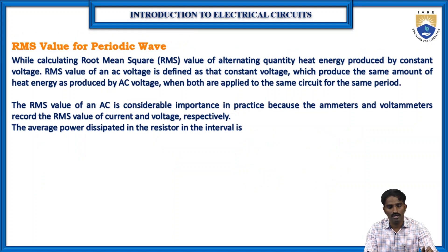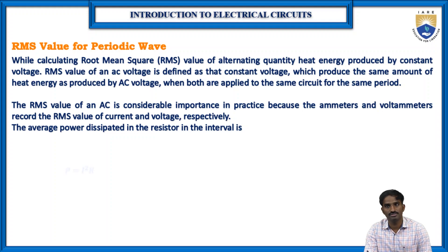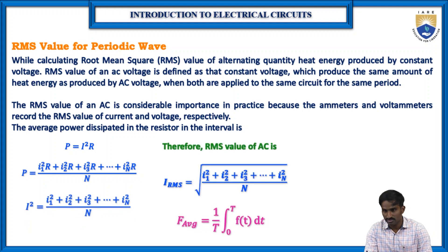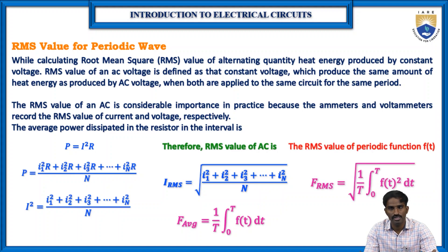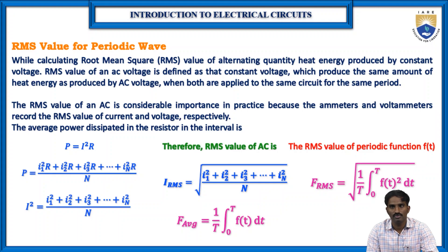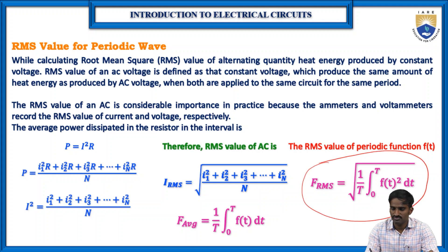The RMS value of a periodic waveform is given by: f_RMS = √[(1/T) ∫₀ᵀ f(t)² dt]. This comes from the power waveform concept — i₁²R + i₂²R + ... + iₙ²R divided by n, raised to the power of 1/2. Using this equation we can find the RMS value of any periodic waveform. Here T represents the time period and the integral limits represent the conduction period.